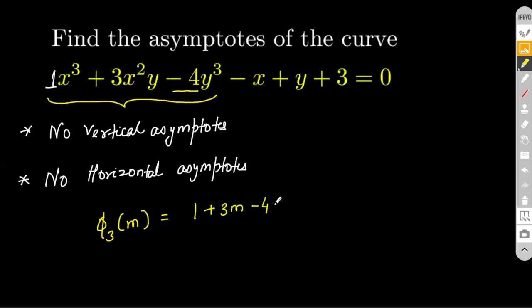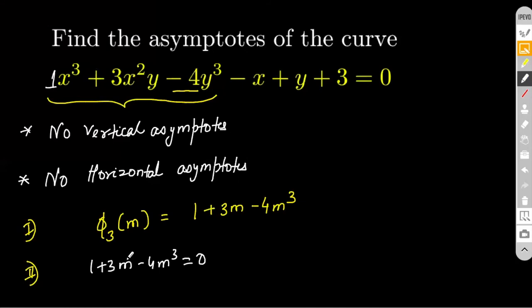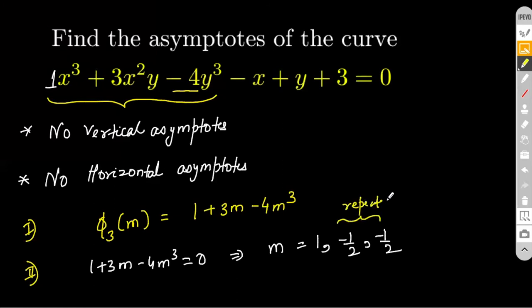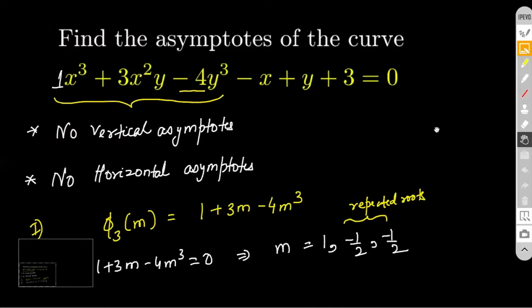So we get φ₃(m). In step two, we equate this to 0 and find the values of m. In the interest of time, I'll directly give you the result: this gives m = 1, m = −1/2, and m = −1/2. So what you see here, dear students, is that this has got repeated roots — m = −1/2 is a repeated root. Now let's try to figure out how we find the value of c when there is a repetition of m roots.